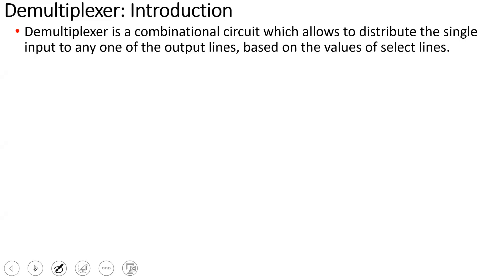So what is DEMUX? It is a combinational circuit which allows distributing a single input to any one of the output lines based on the value of select lines. Here we have one input, and some output lines. One input will appear in any one output line, or the other outputs are 0. Which output line will appear is decided by the select lines.